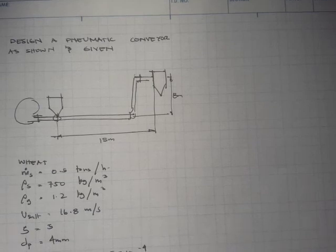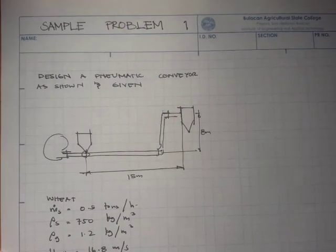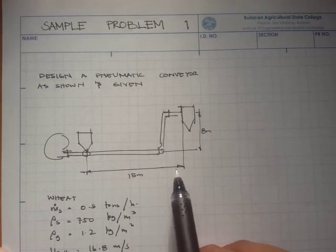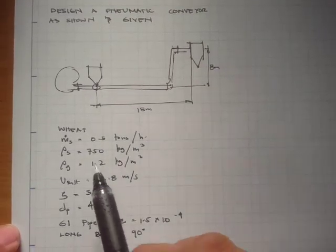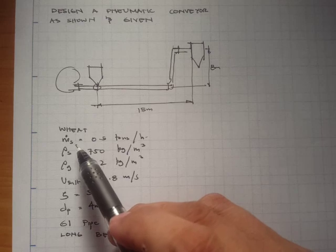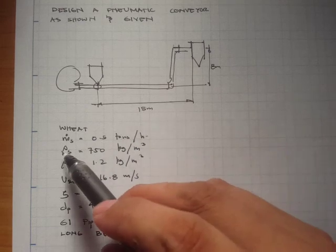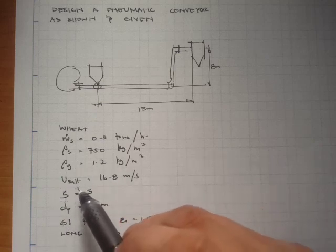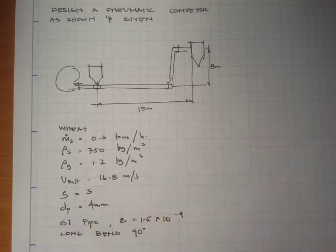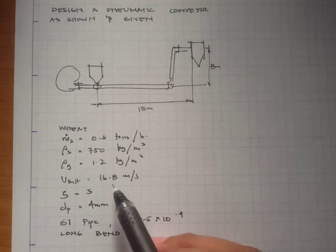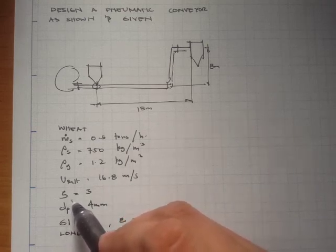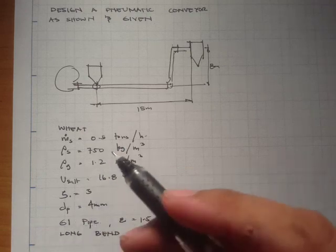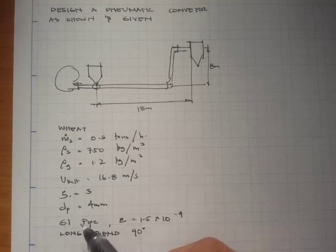Now we'll do our first sample problem on this topic: pneumatic conveyor. The problem states that we design a pneumatic conveyor as shown. We have a horizontal distance of 15 meters and a vertical distance of 8 meters. The product to be transported is sweet and the required mass flow rate of solids is 0.5 tons per hour. Also given are the density of the solids and the density of the gas for air, the saltation velocity — which will be our design velocity — at 16.8 meters per second, and the solid loading ratio of 5, which is the ratio of mass flow rate of solids over mass flow rate of gas. Also given is a particle diameter of 4 mm.